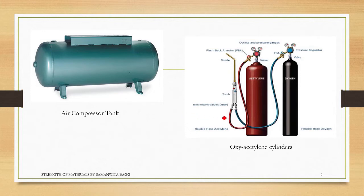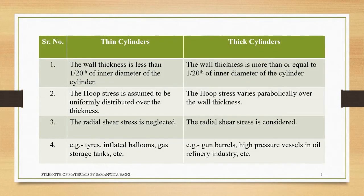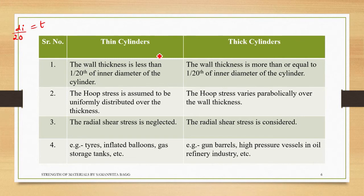In this chapter we study thin cylinders; thick cylinders will be covered in further sessions. For a thin cylinder, the wall thickness is less than 1/20th of the inner diameter d_i, meaning it is very small. For a thick cylinder, the thickness is greater than or equal to 1/20th of the inner diameter, so the thickness is considerably greater.